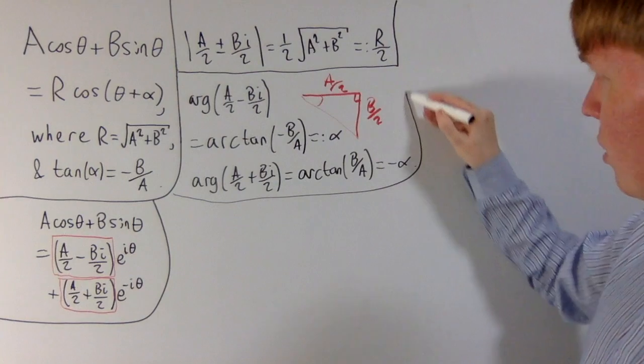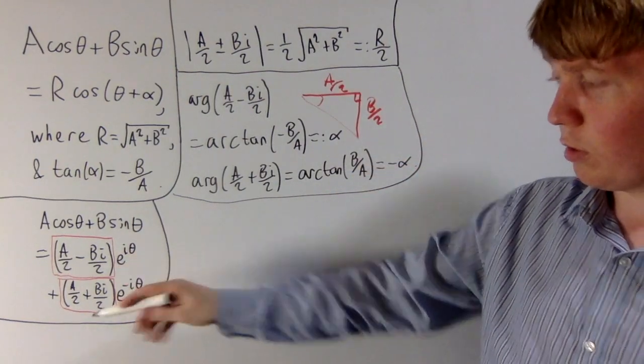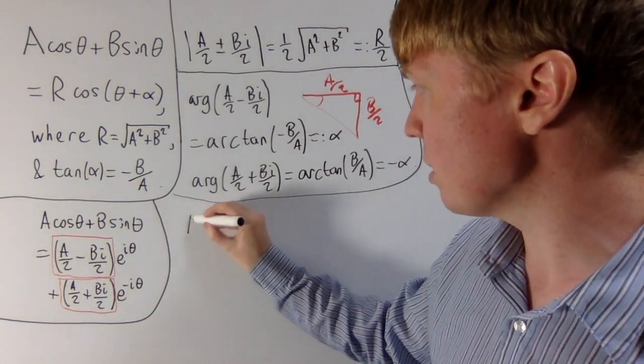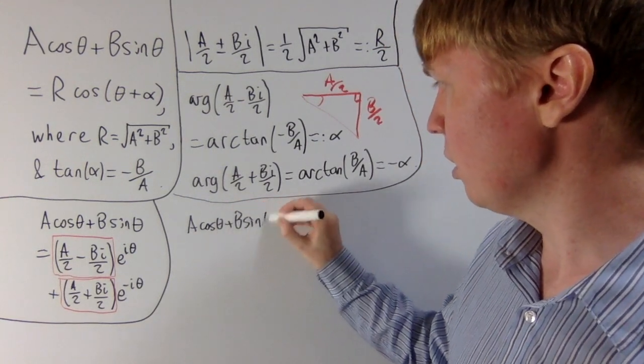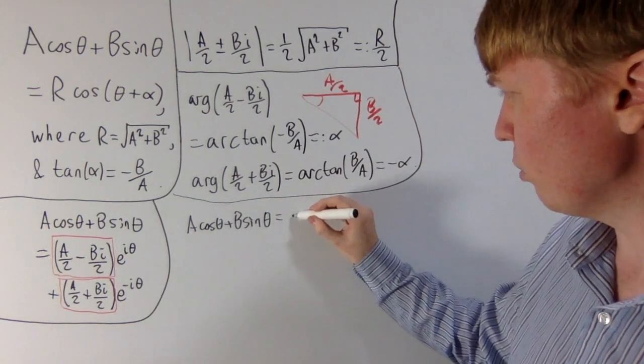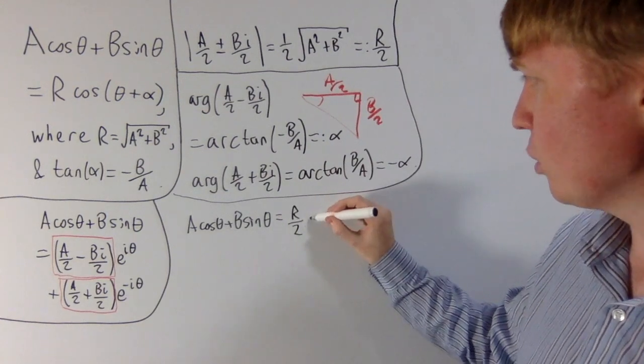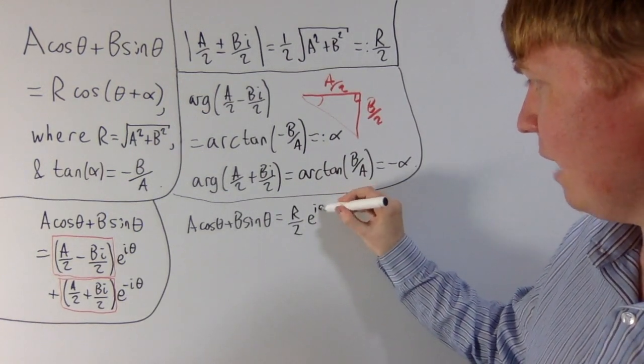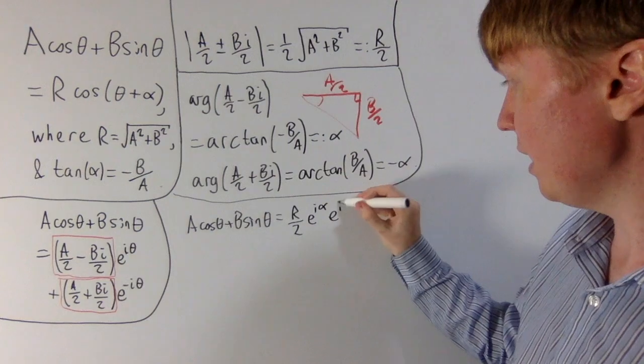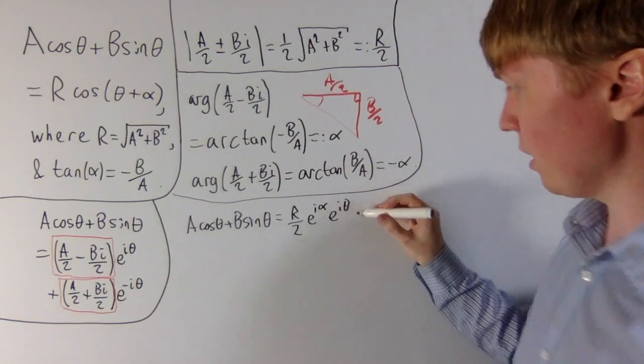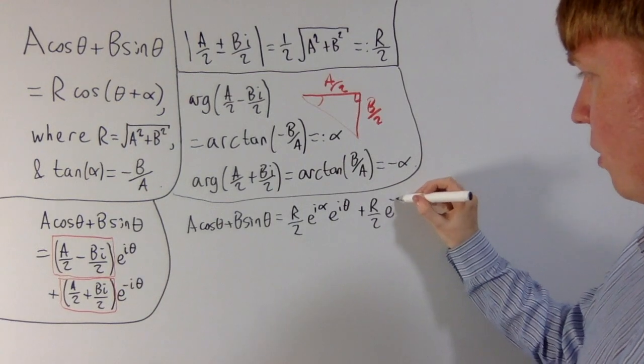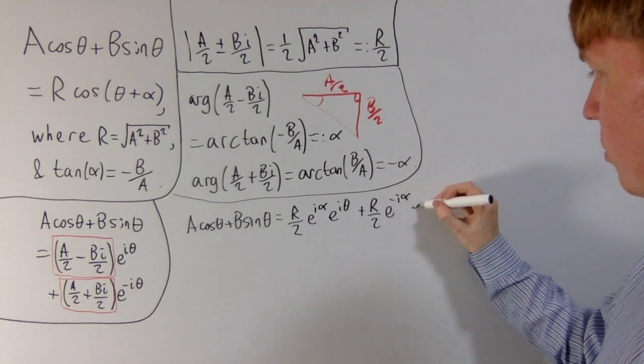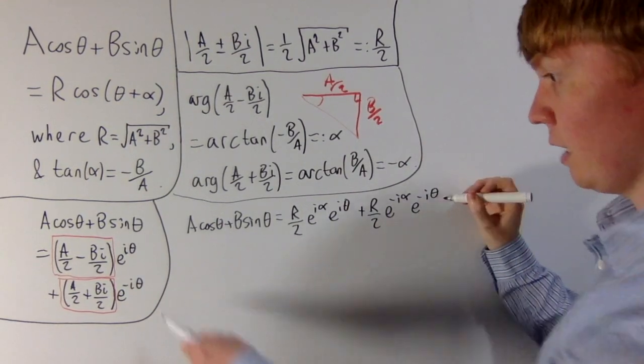Now let's substitute these in. If we convert both of these into polar form, we know that A cos theta plus B sin theta is now going to be equal to r over 2 multiplied by e to the i alpha multiplied by e to the i theta, so that's just our e to the i theta term there, then plus r over 2 e to the minus i alpha multiplied by e to the minus i theta there.